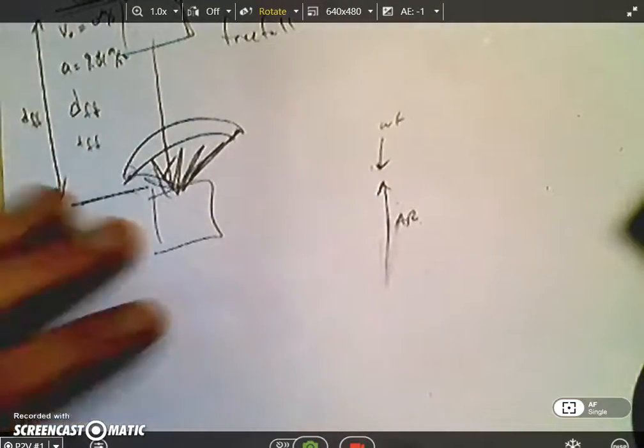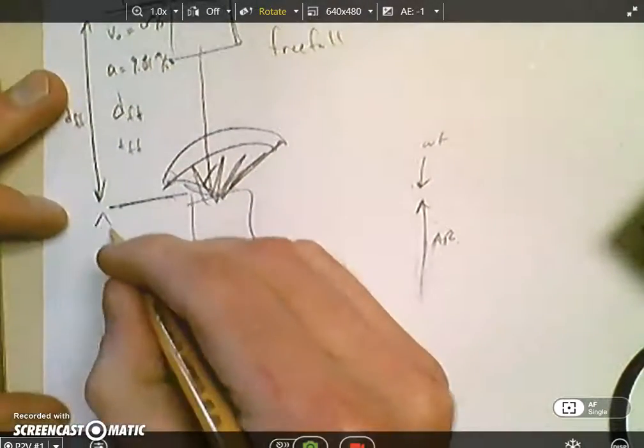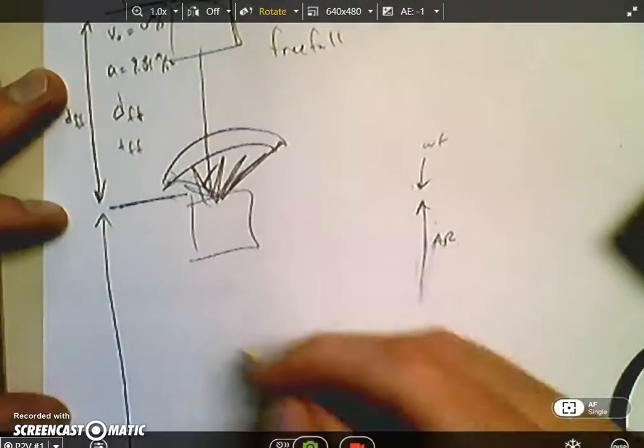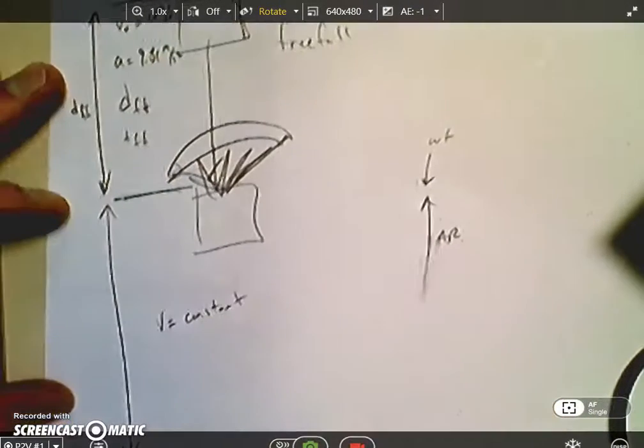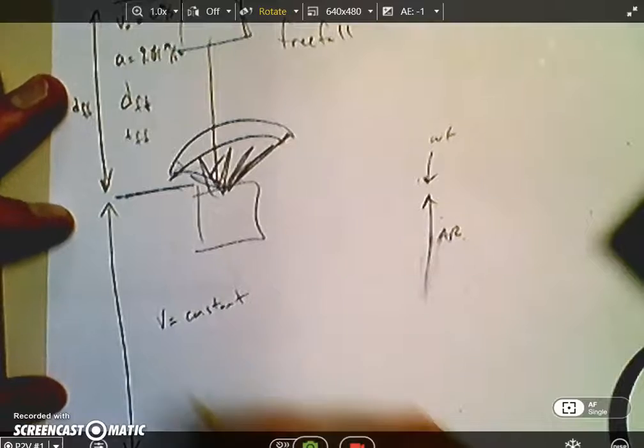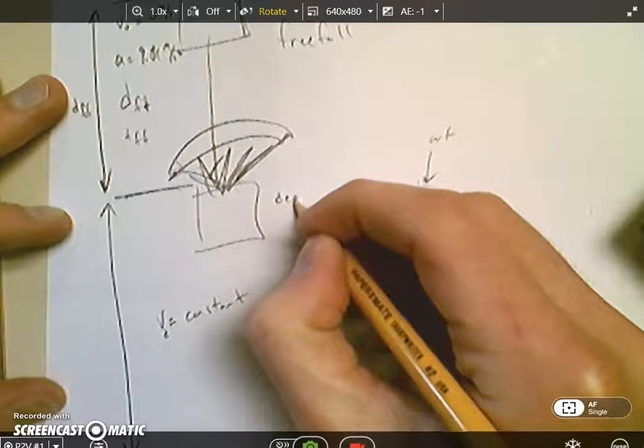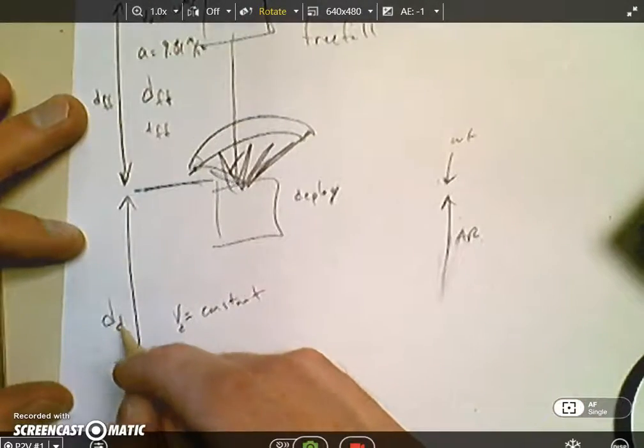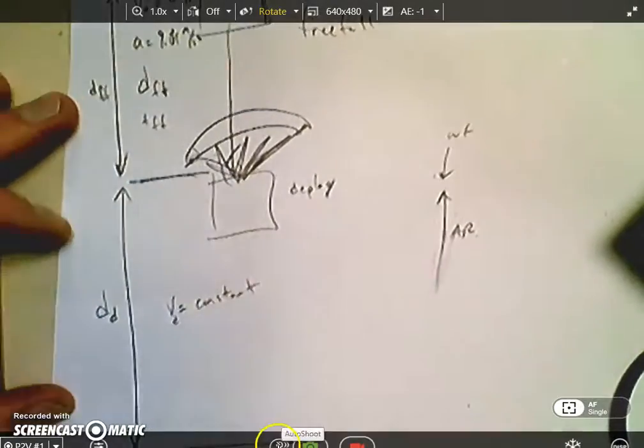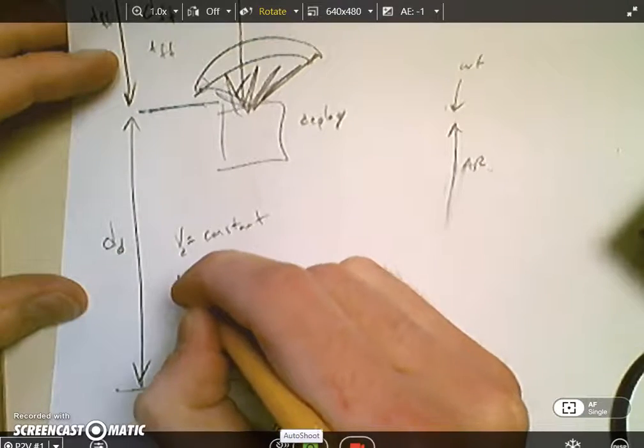They don't do it that way, they just say when the parachute deploys it then moves with a constant velocity for the rest of the way. The velocity is constant and this would be the deployment velocity, and then this would be the deployment distance that it falls from there and it's got some time of deployment.